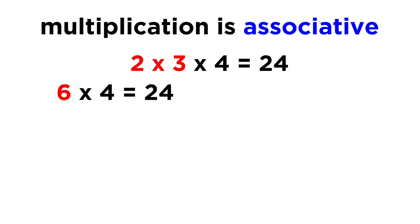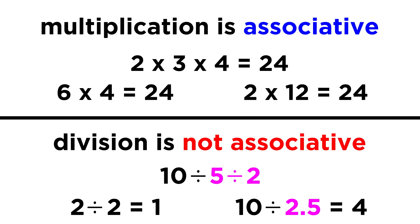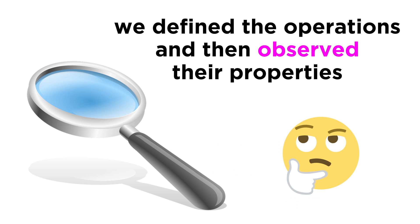We could do six times four, or two times twelve — it doesn't matter. Division, however, is not associative; ten divided by five divided by two will provide a different result depending on which number is divided first. This is not arbitrary; we defined these operations, and then observed whether or not they abide by commutativity and associativity.